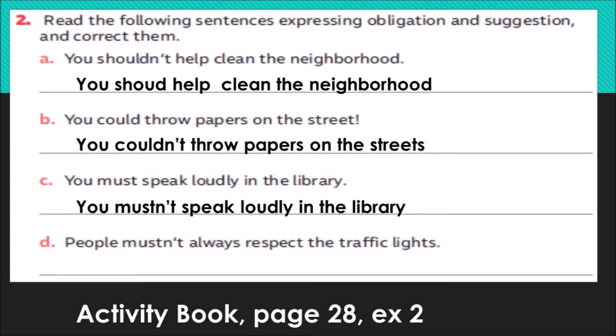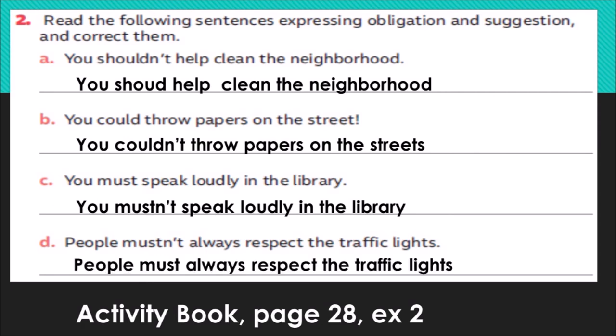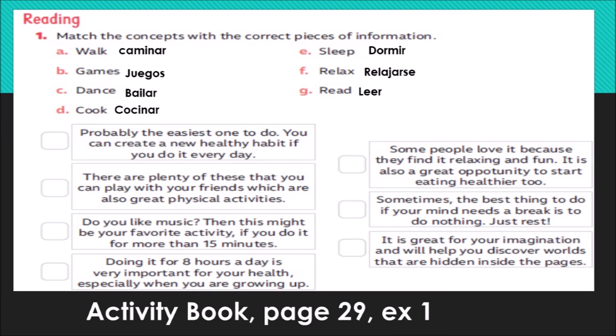Siguiente. D: 'People mustn't always respect the traffic lights' — la gente no debe siempre respetar los semáforos. Y aquí hacemos la obligación. The correction: 'People must always respect the traffic lights' — la gente siempre debe respetar los semáforos. Very good. Next activity: match the concepts with the correct pieces of information. Una los conceptos con las siguientes informaciones.